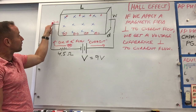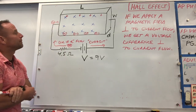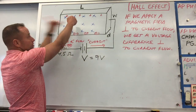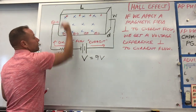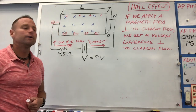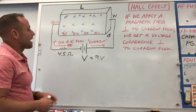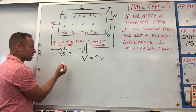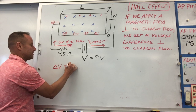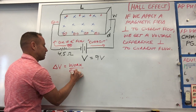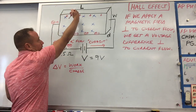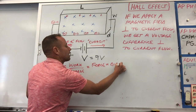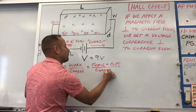There's going to be a voltage difference perpendicular to the current flow, because of the magnetic force on these electrons pushing them downward. To find the size of that voltage difference, voltage is work per charge. The work needed to drag charge down here is force times distance, divided by the charge.